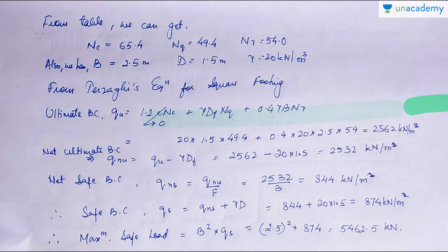Net ultimate bearing capacity is QU minus gamma·DF. Subtracting the overburden pressure: 2562 minus 20 x 1.5 equals 2532 kN/m².